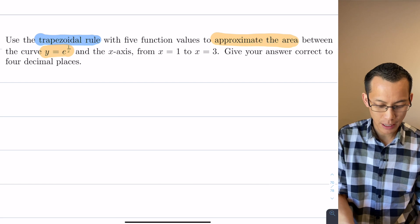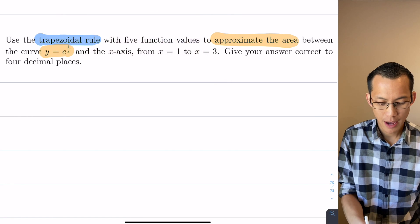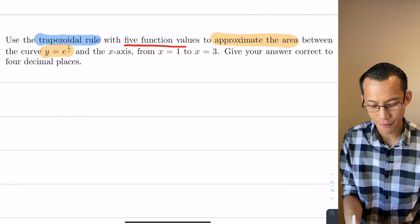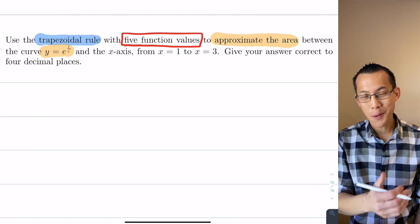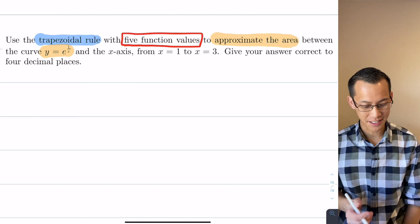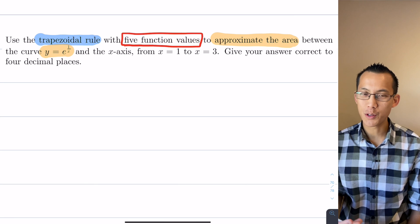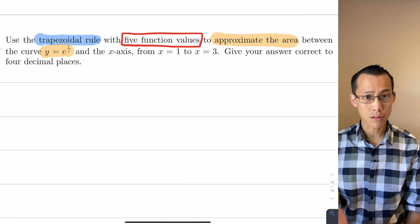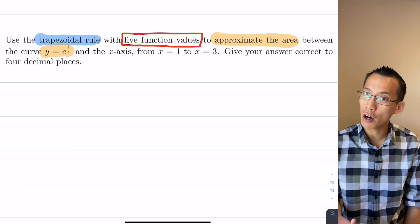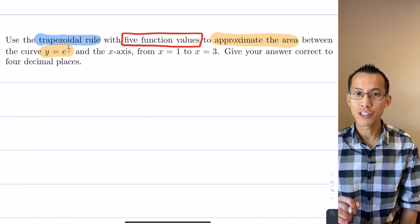Now the next piece of information that needs to be paid attention to is this crucial phrase here: five function values. Now we were posed this question before in one of our previous lessons, when we are told to use the trapezoidal rule, how many trapeziums are we supposed to use? The answer is absolutely you will be told.